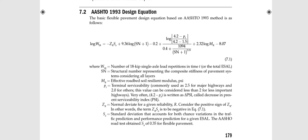SN is the output, and MR is the resilient modulus of the soil or subgrade layer. We insert the resilient modulus of the soil, our desired terminal serviceability, a reliability factor, and the standard deviation of 0.35, plus the total ESAL traffic level. We solve this equation to find SN, and from SN we can calculate the thickness of the different pavement layers, which I will show later in this chapter.